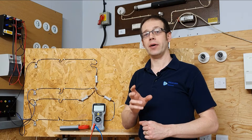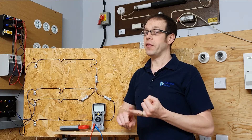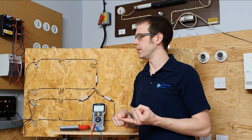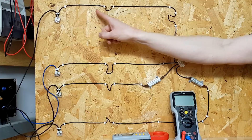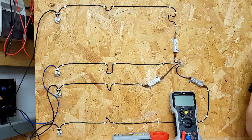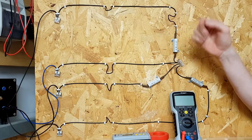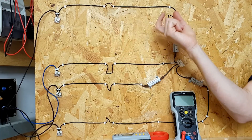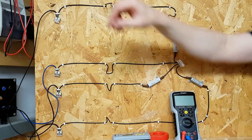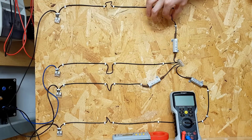Now let's think about line current and phase current. The definitions I'm about to give might seem a bit abstract for a star connected load, but they'll be really useful when we get to the delta connected load. Line current is the current flowing through the supply line to the load. Phase current is the current actually flowing through the load. I've built small loops in the cable on this rig so we can measure both values easily.